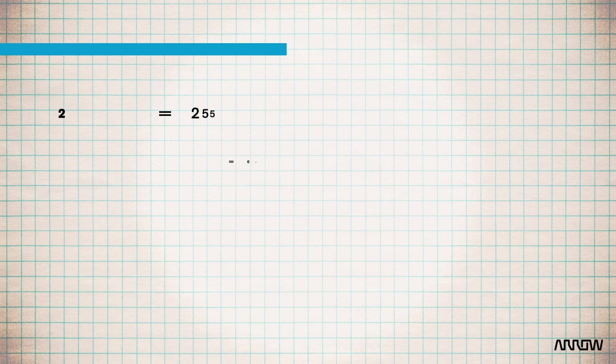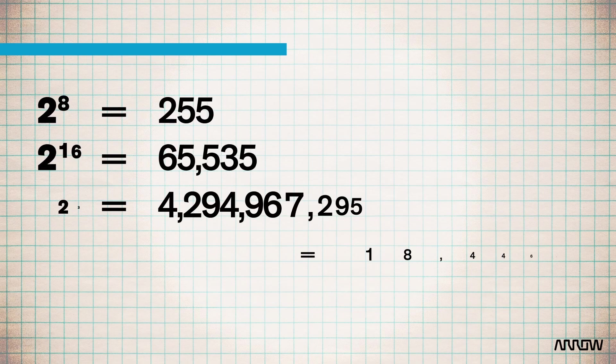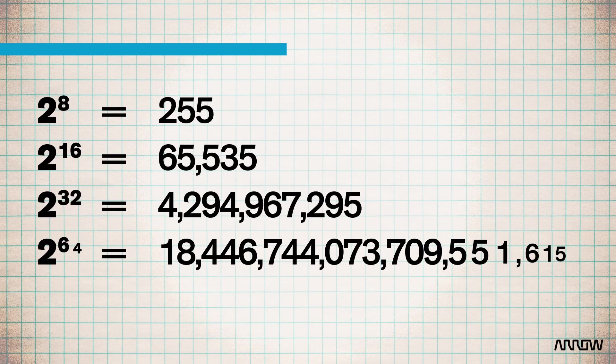With an 8-bit microprocessor it is treated as 2 to the 8th, so that is 256 unique numbers — 0 through 255 — because it's 2 to the 8th minus 1. If you move to 16-bit, that is actually 65,000 approximately.